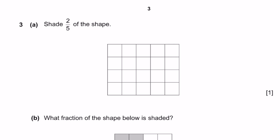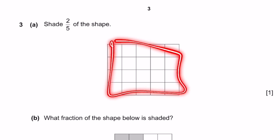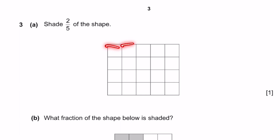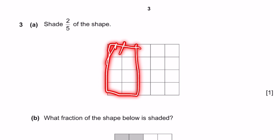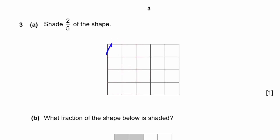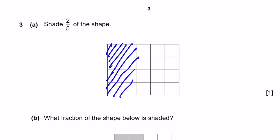Question 3A. Shade 2 fifths of this shape. We can see there are five columns, so we shade two columns, which is 2 fifths. I'm just going to shade it like this — it's not exactly shading, but I'm showing the part where you need to shade.